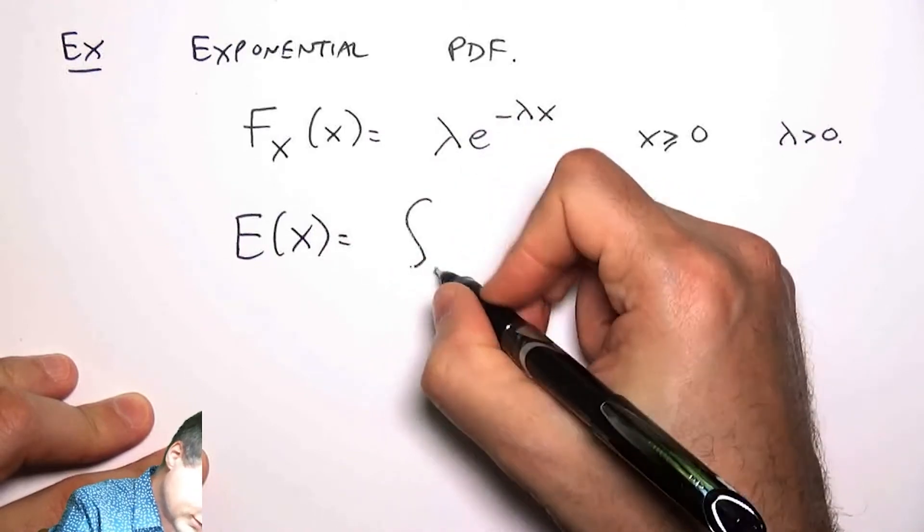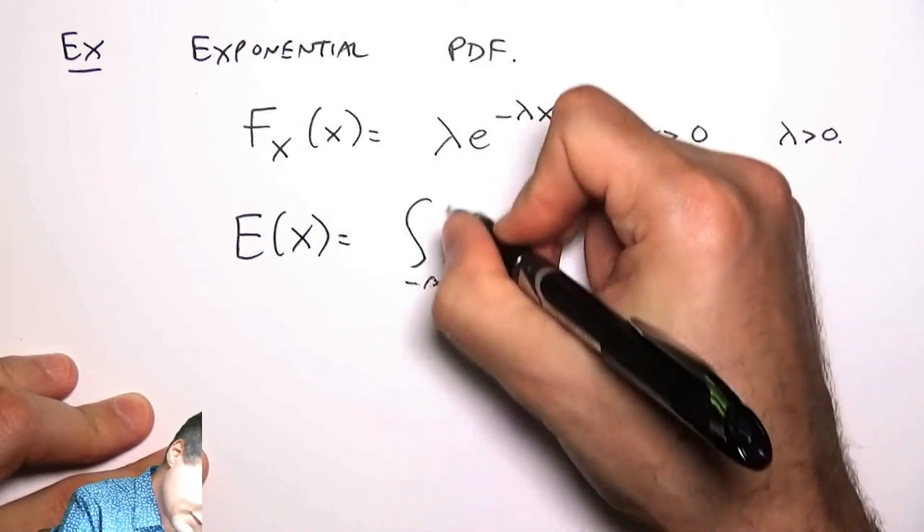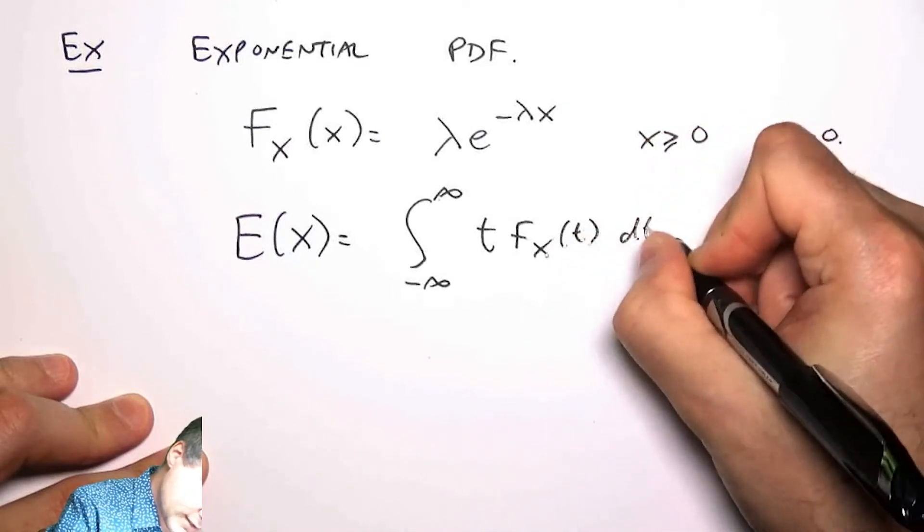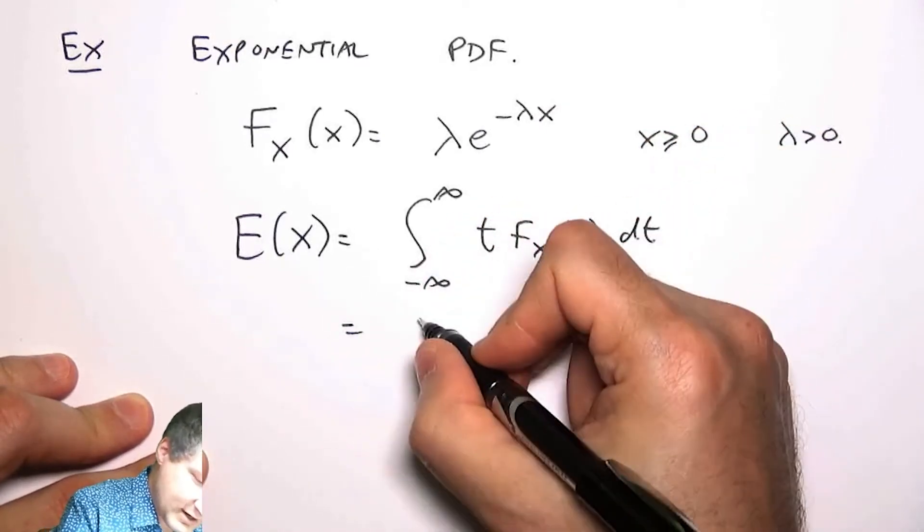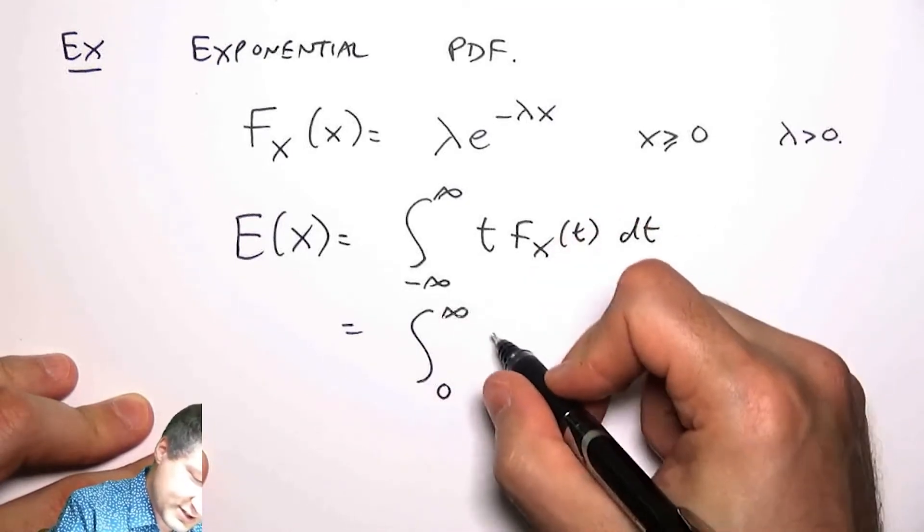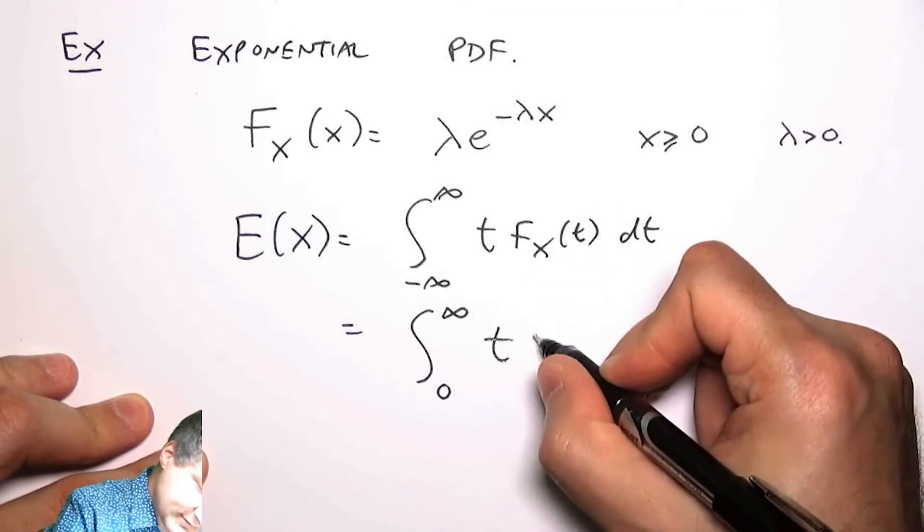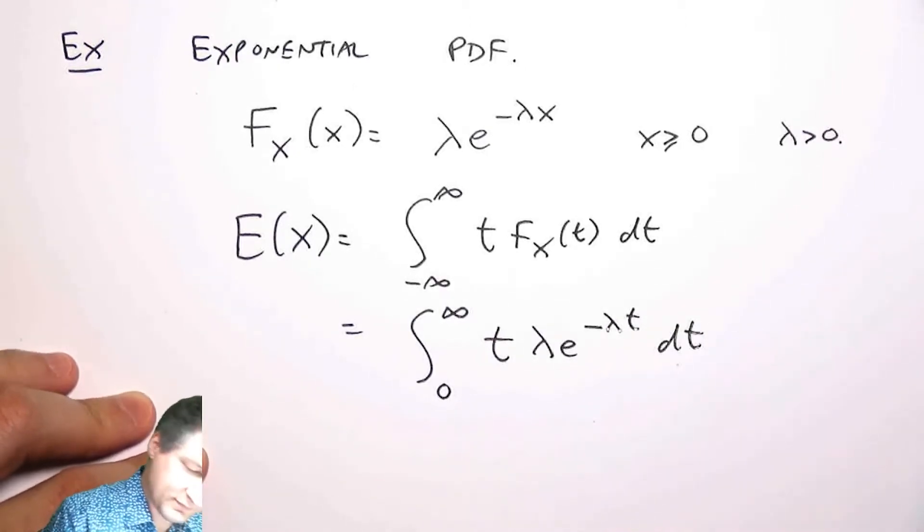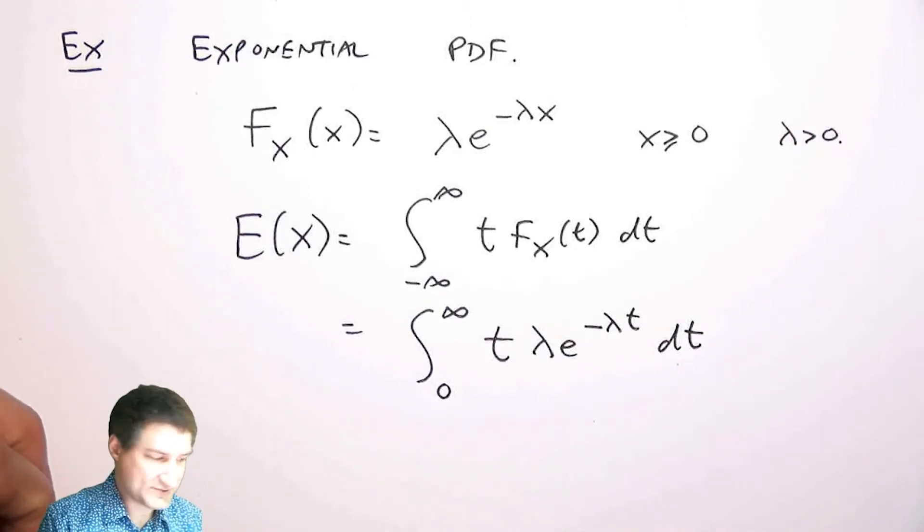So what is the expected value? It's going to be the integral from, I'm just going to write down the definition. This is the basic definition. And in our situation, the PDF is 0 when things are less than 0. And then I substitute in this thing for when x is greater than equals 0.